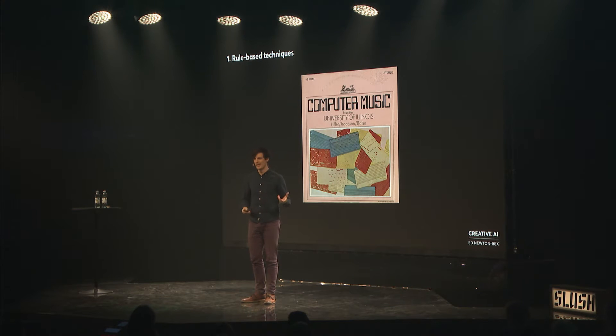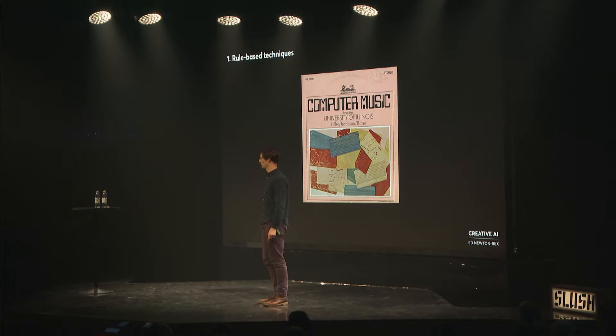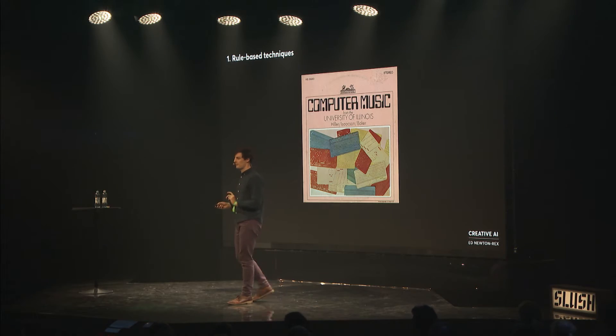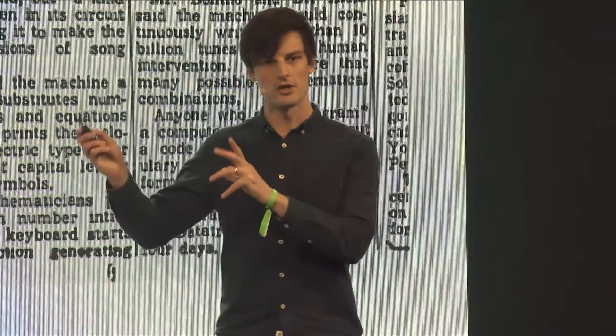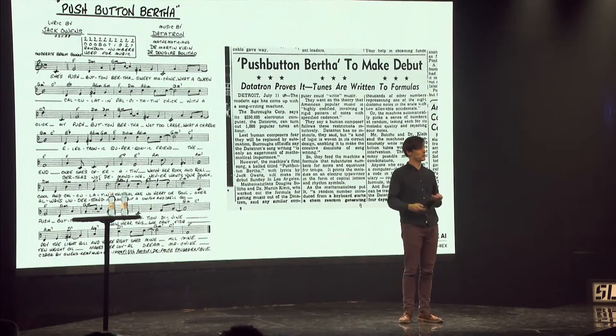The first way is by using rules. Music is full of rules — this is why when you listen to any famous pop song, it usually uses the same four chords. One of the first examples of algorithmic composition that was recorded was in the 1950s, when Hiller and Isaacson composed a piece called The Iliac Suite. This was composed by a computer using rules. This is also the first example of a commercial application of computer-generated music — an advertising campaign by the computer company Burroughs, where they got a rule-based system in the 50s to write a piece of music.